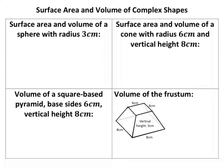Right, we're looking at surface area and volume of complex shapes. Now, complex shapes I'm calling spheres, cones, pyramids, frustums, stuff like that. So that's all they are.